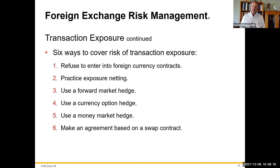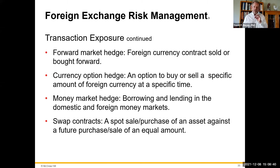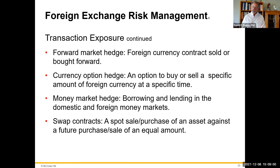There are different ways to cover transaction exposure. You can refuse to enter into foreign currency contracts and only use U.S. dollars, practice exposure netting, use a forward market hedge, or use a currency option. You can also enter a swap contract. A forward hedge is a foreign currency contract sold or bought forward. A money market hedge involves borrowing and lending in the domestic and foreign money markets. A swap contract involves a spot sale of an asset against a future purchase or sale of an equal amount.